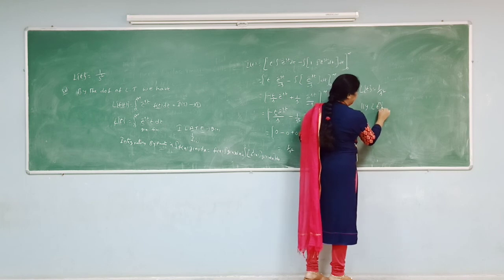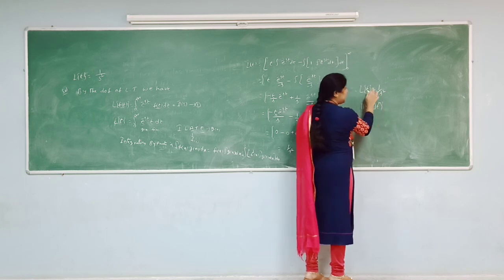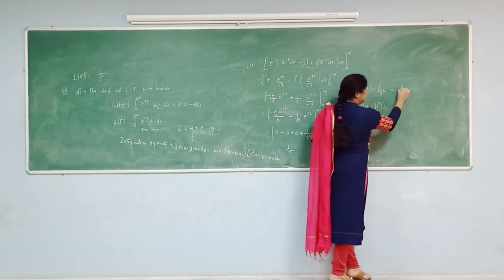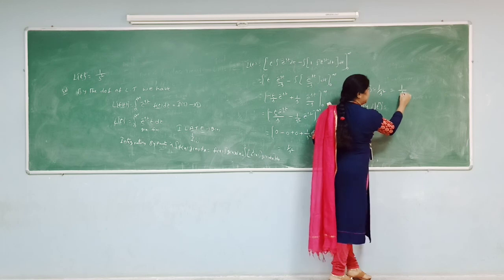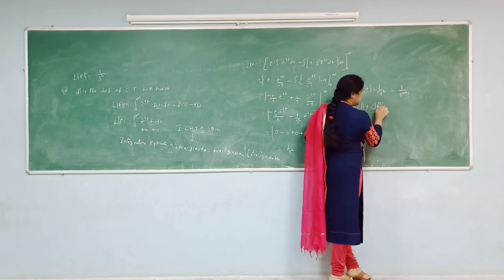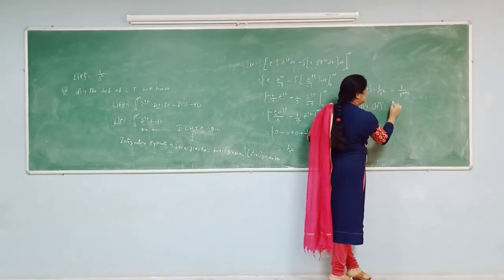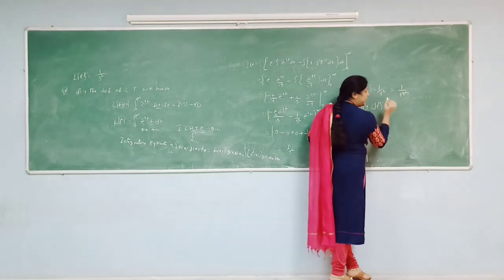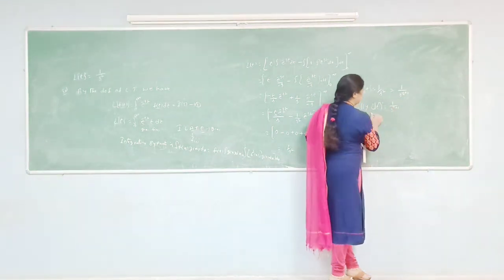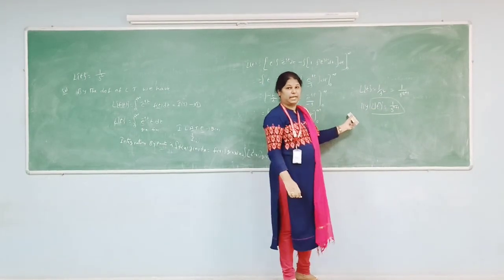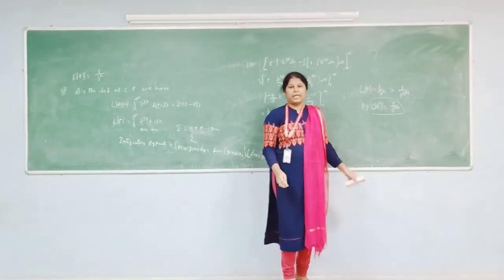Similarly, L{tⁿ} — in place of 1 put n — then L{tⁿ} = n!/s^(n+1). This is the standard result for the nth power. Thank you.